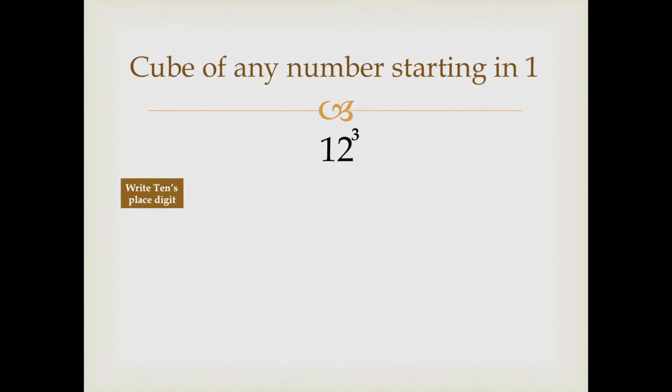Write down the tens place digit as it is, which is 1. Write down the ones place digit as it is, which is 2. Write down the square of the ones place digit, and the square of 2 is 4.